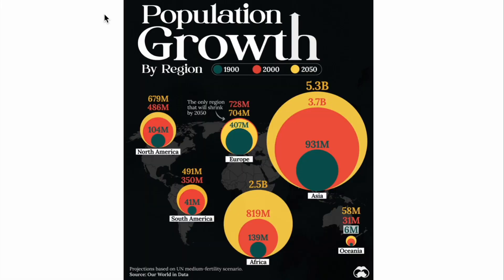The first map is population growth by region, broken down into three different years: 1900, 2000, and 2050 — with 2050 being a projection. Starting in North America: in 1900 there were 104 million people, in 2000 it was 486 million, and the projection for 2050 is 679 million people.